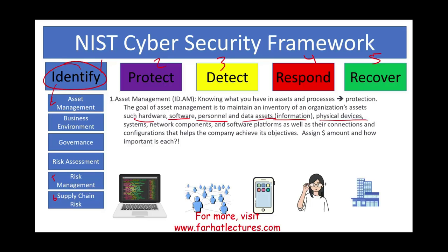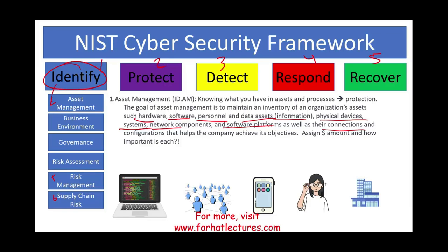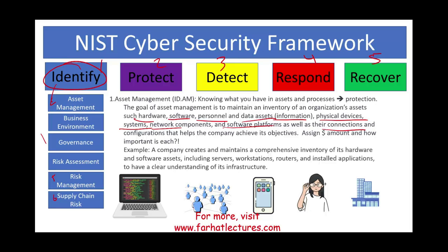You want to protect your building, your connections, and configurations that help the company achieve its goals. You may also want to assign a dollar amount and rank how important each asset is, because that helps later when you devise your risk assessment and governance strategy. Not knowing what you have is a problem in itself. For example, a company creates and maintains a comprehensive inventory — servers, workstations, routers, installed applications — to have a clear understanding of its infrastructure. You need to identify what you have in order to start protecting it.